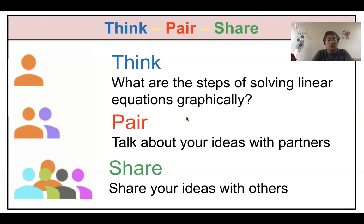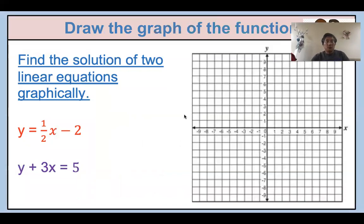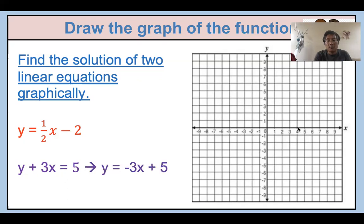Now let's go over one more example. We have y = (1/2)x - 2 and y + 3x = 5. For the first graph: the y-intercept is -2, so you start from -2. The slope is 1/2, so the denominator is 2 for x and the numerator is 1 for y. When x goes 2 units, y goes 1 unit up. So: 2 units, 1 unit — that's the slope, rise over run: 1/2.